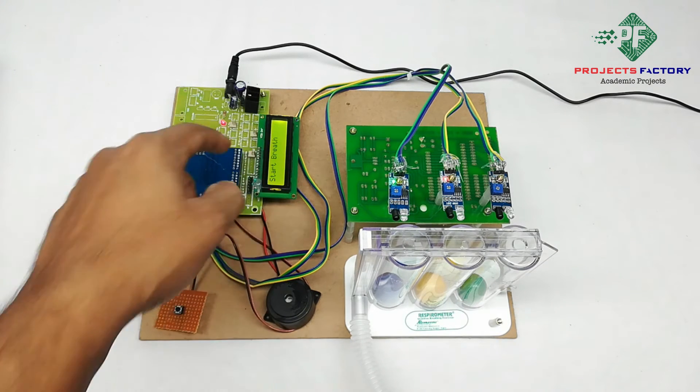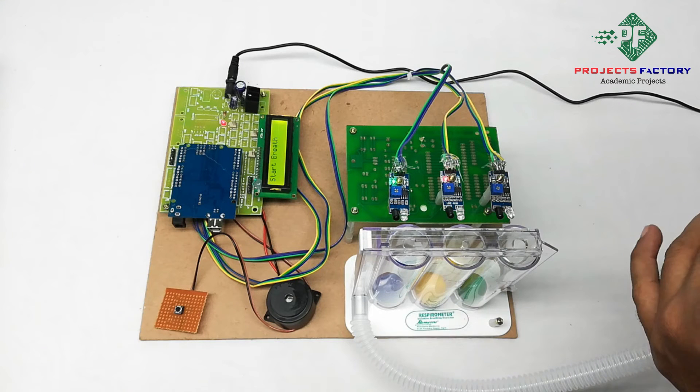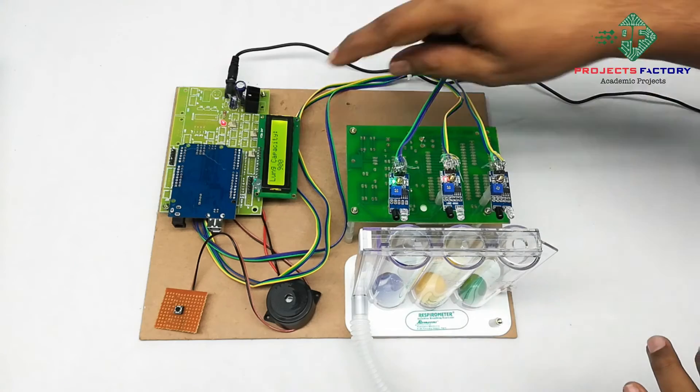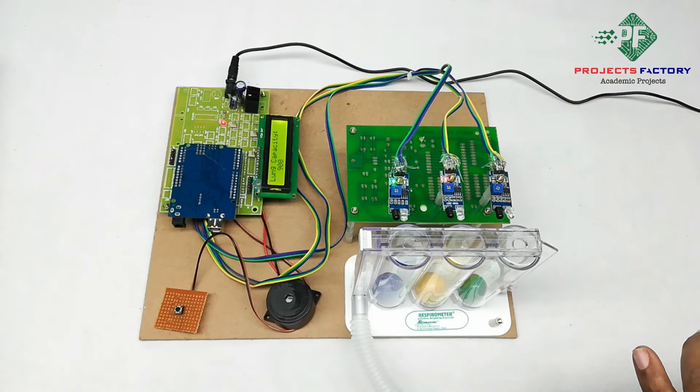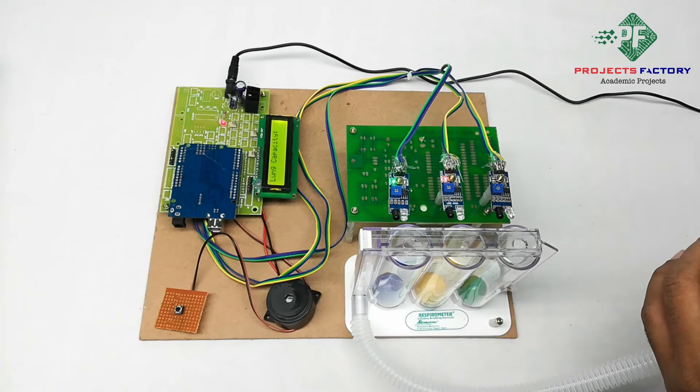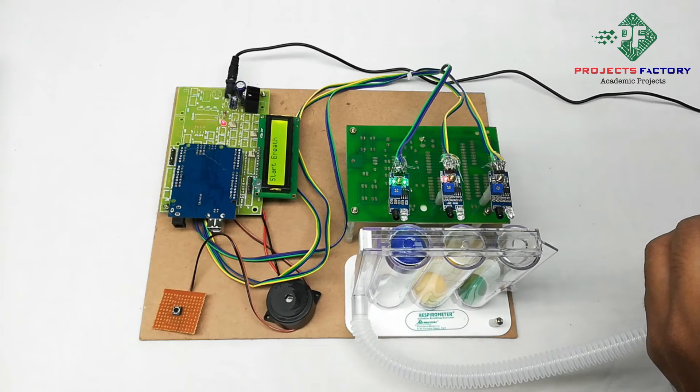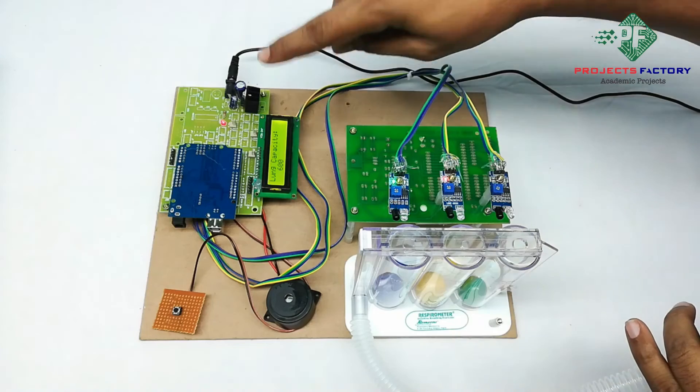It's asking to start breathing. Here we have to hold the breath for at least one second. Then it shows lung capacity - here we can see 900, you can see here 600 for one ball.